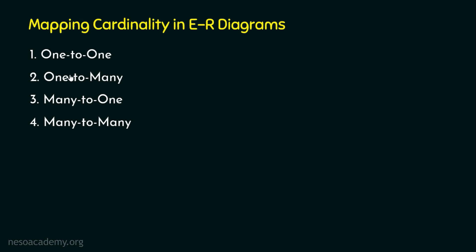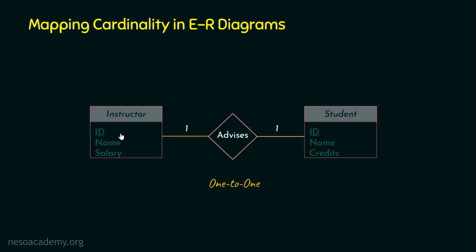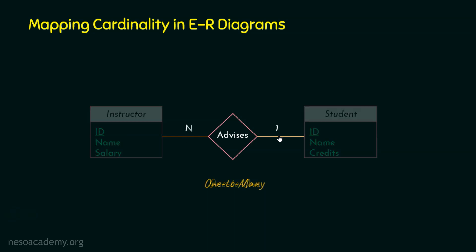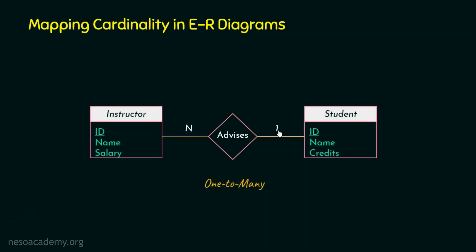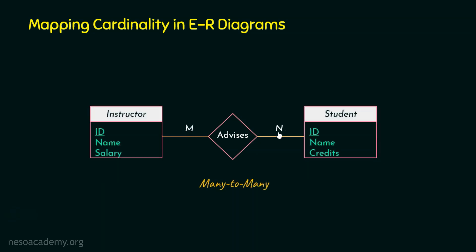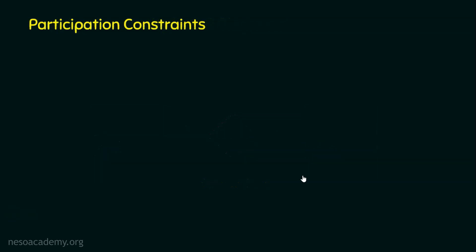Here is how we represent the four types of mapping cardinality in ER diagrams. This is one-to-one — you can see the numbers here. The second is one-to-many, the third is many-to-one, and the last is many-to-many. Now let's focus on participation constraints.